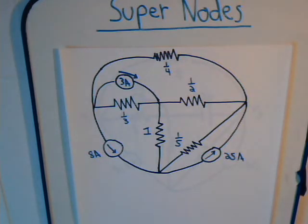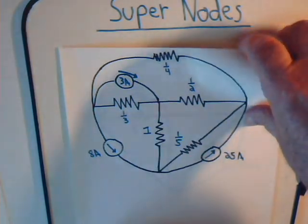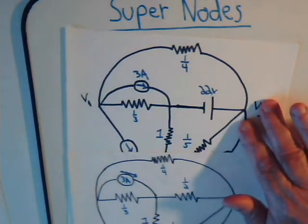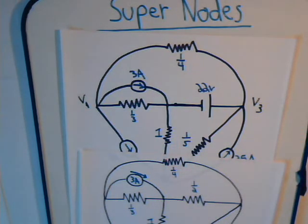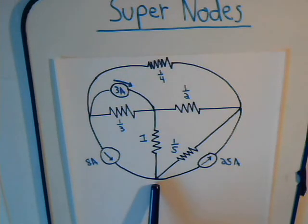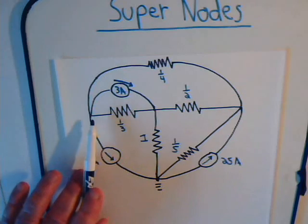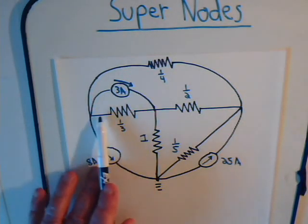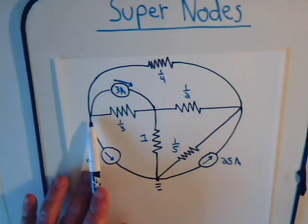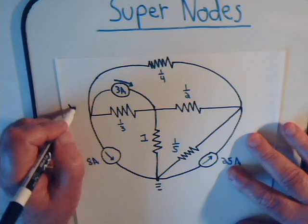We're going to look at the circuit, determine where the nodes are, and determine what the node voltages are. Then we're going to modify the circuit by removing this resistor and replacing it with a voltage source, and again determine what the node voltages are. The first thing we have to do is determine where the nodes are. Down here at the bottom we have a single node, and this single node is grounded — so it is at zero potential.